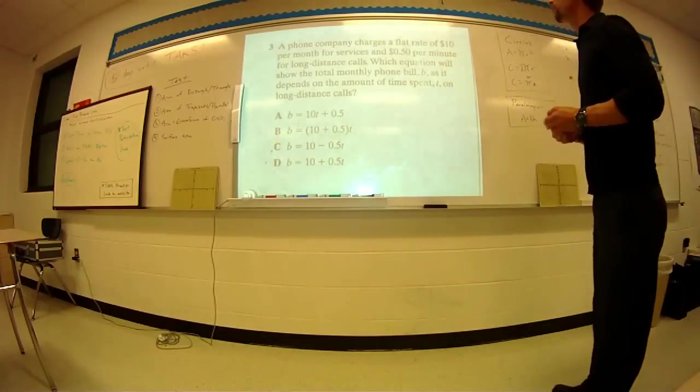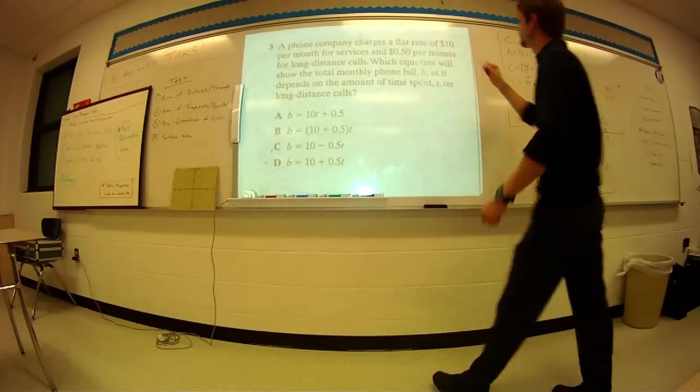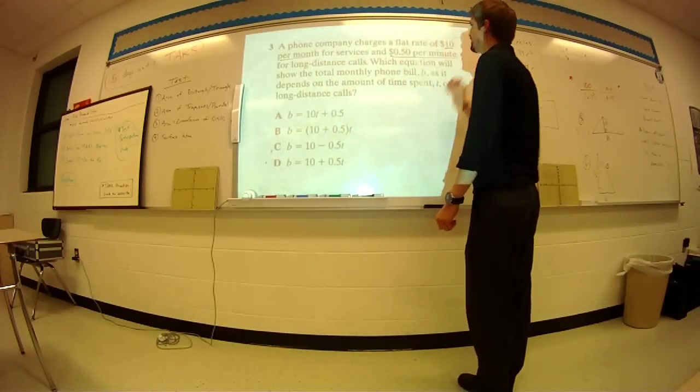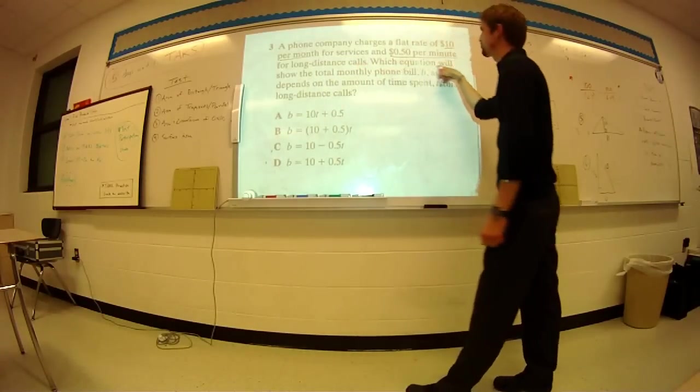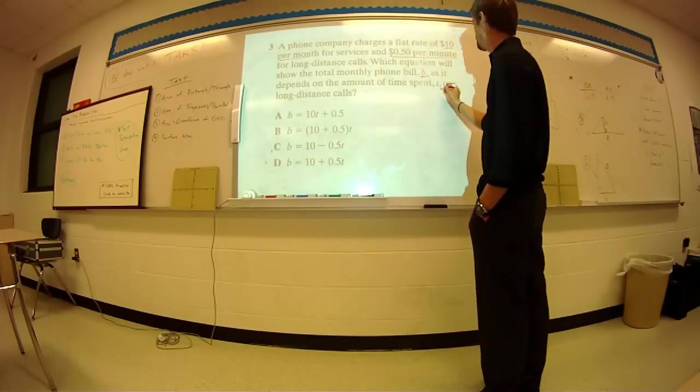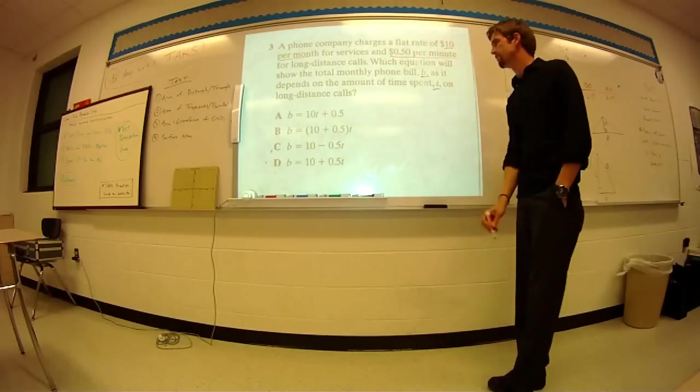So look at this next one. The phone company charges flat rate of $10 per month, 50 cents per minute for long-distance calls, which equation will show the total monthly bill B, as it depends on the amount of time T, for long-distance calls.